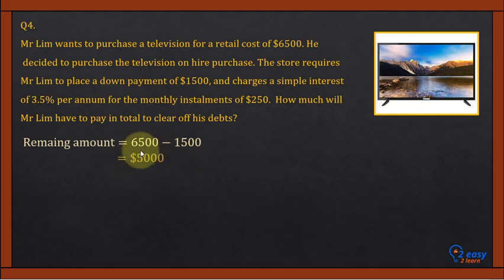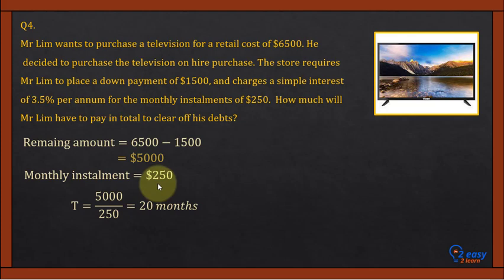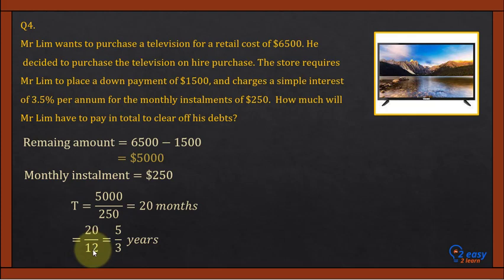To find the number of months: if each installment is $250 and the remaining balance is $5,000, then number of months = $5,000 / $250 = 20 months. Since simple interest is per annum, we convert 20 months to years: 20/12 = 5/3 years. This time value is used to calculate the simple interest.